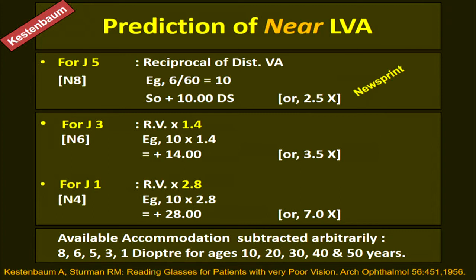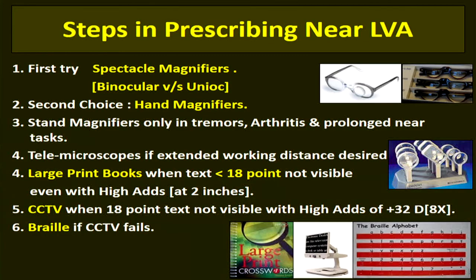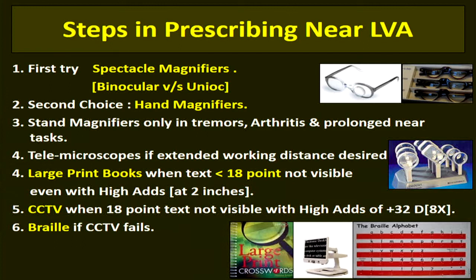After making your prediction, you can test one level up and one level down depending on the patient's comfort and demands, then prescribe the final low vision aid. For near low vision aids, the first choice is a spectacle magnifier, as it gives the widest field possible and is familiar and unobtrusive.